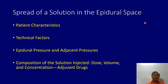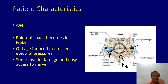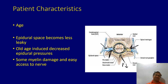The spread of an epidural solution depends on patient characteristics, technical factors, epidural pressures, and the solution itself. Regarding patient characteristics — age: with advancing age, the epidural space becomes less leaky. Old age also brings decreased epidural pressures, some myelin damage, and easy access to nerves. These all cause more intense epidural actions. Above age 40, there is no further decrease in drug requirement.